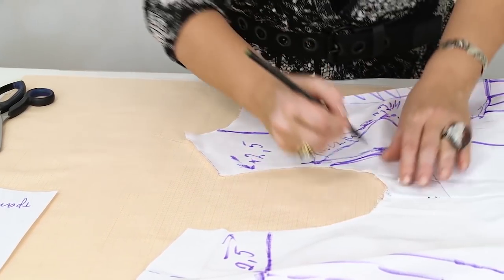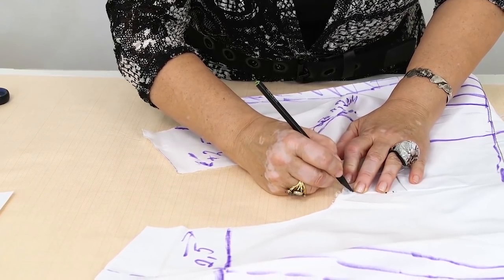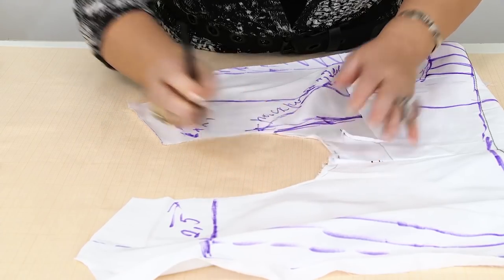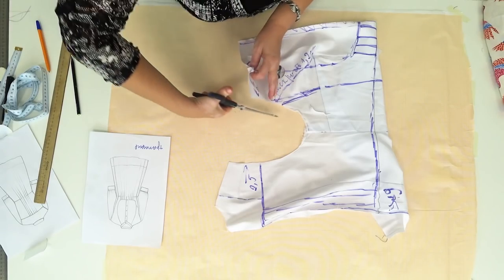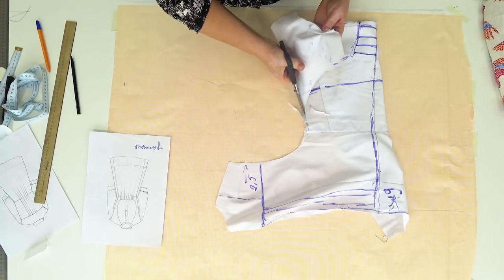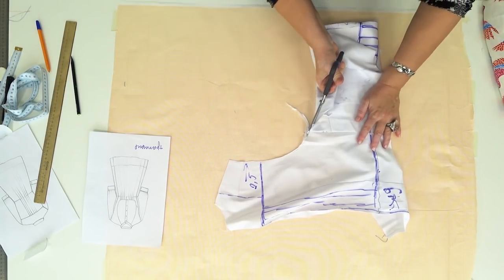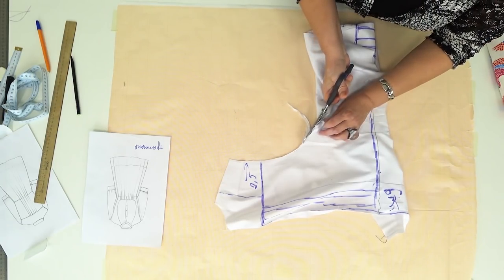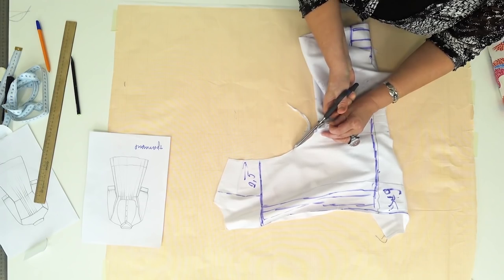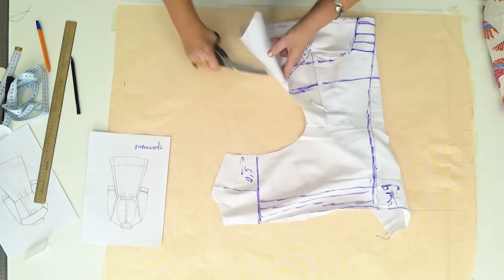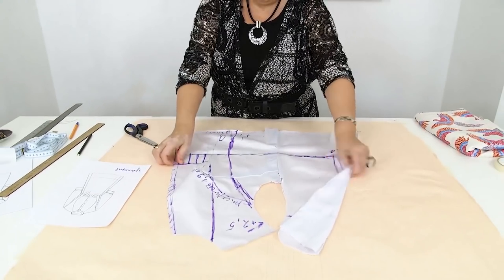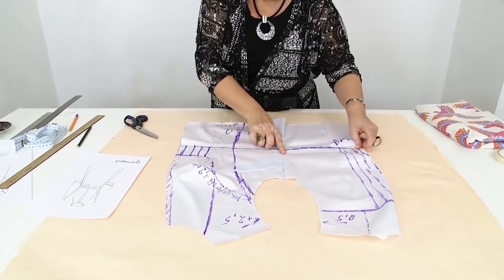I want to make the armhole a bit deeper. This is what I'm doing now. Have a look at the mockup once again. The back is tighter than the front.